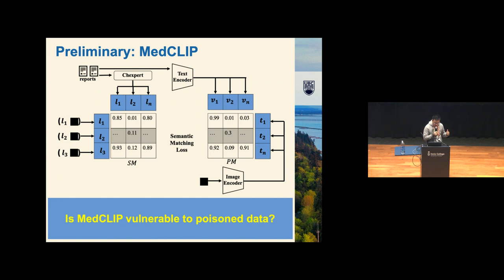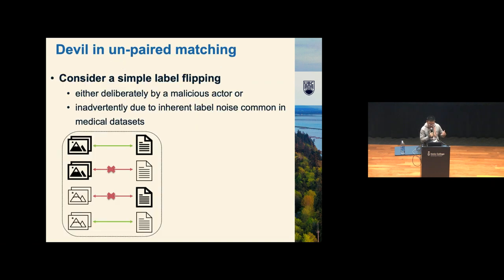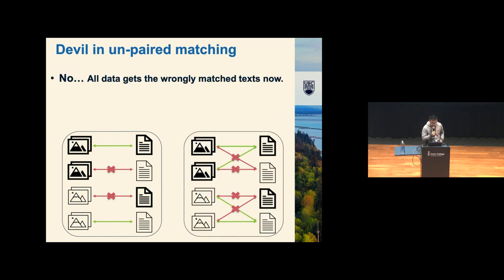Our question is: is MedClip, or this kind of unpaired training strategy, vulnerable to the poisoned data we showed before? We consider simple label flipping either intentionally, like traditional backdoor attack, or unintentionally, like what I just showed before. I'm still using this kind of figure. In one-to-one matching, as we can see, a single flip only affects two images in this small example. However, for unpaired matching, all images match to the wrong text due to the augmented nature of unpaired matching. In the time of data augmentation, the poisoned data also gets augmented.